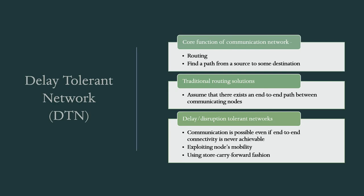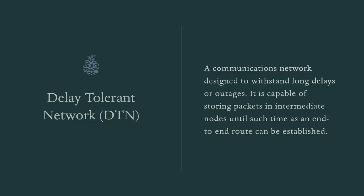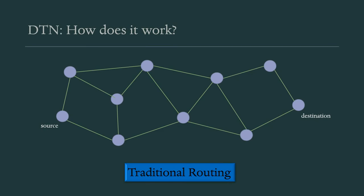A communications network designed to withstand long delays or outages can be called a Delay Tolerant Network or DTN. It is capable of storing packets in intermediate nodes until such time as an end-to-end route can be established. When a node needs to send a message to another node, if that node is within range it directly sends it; otherwise it waits and carries that message until the node is available. This is why the technique is called store-carry-forward.